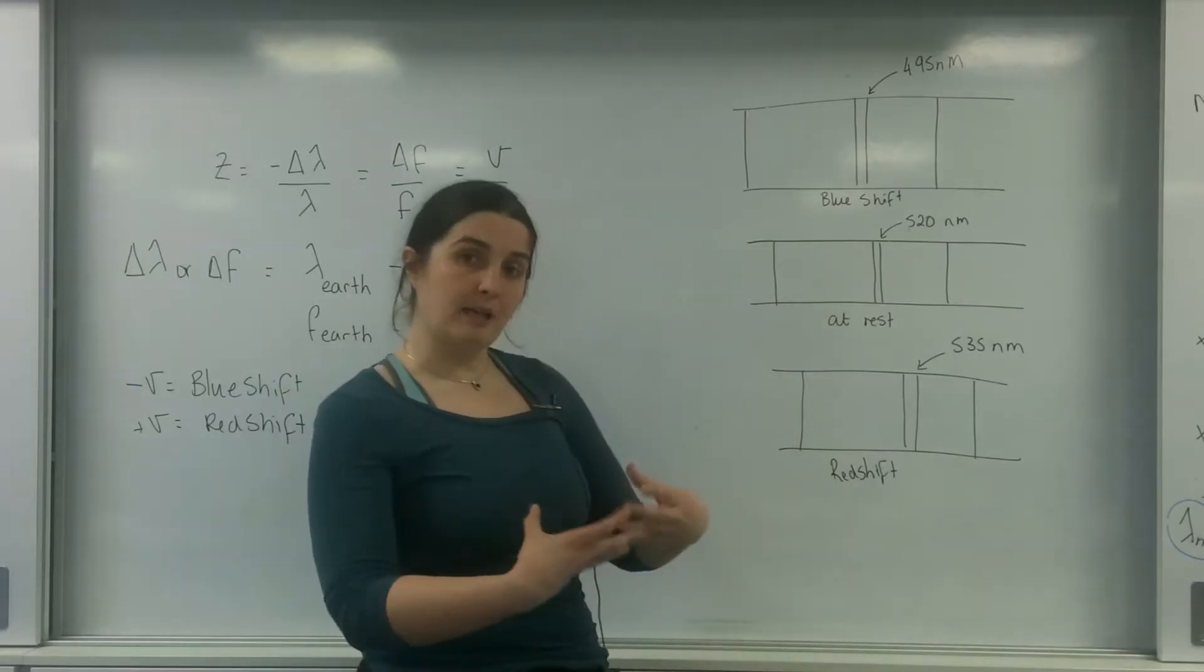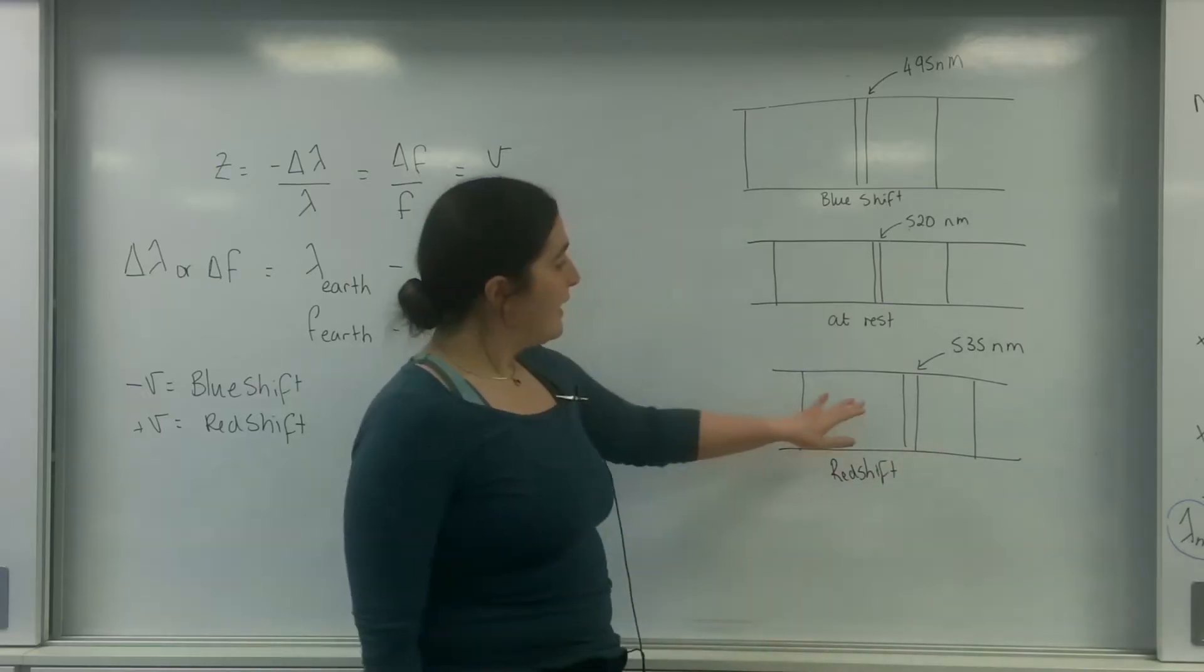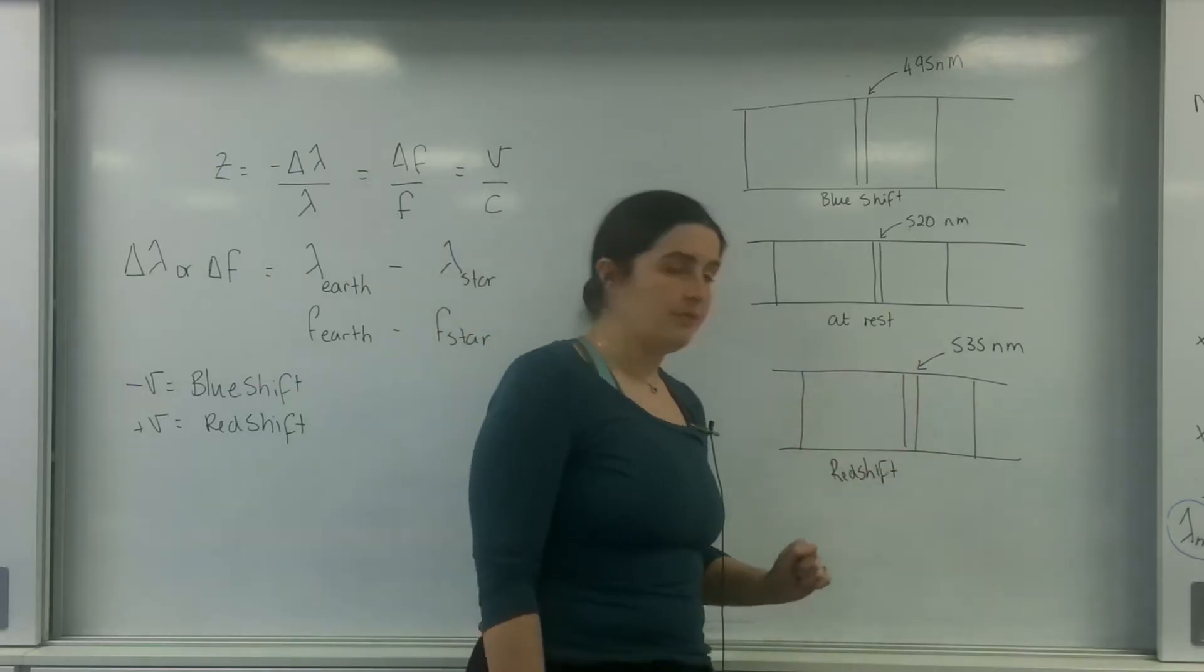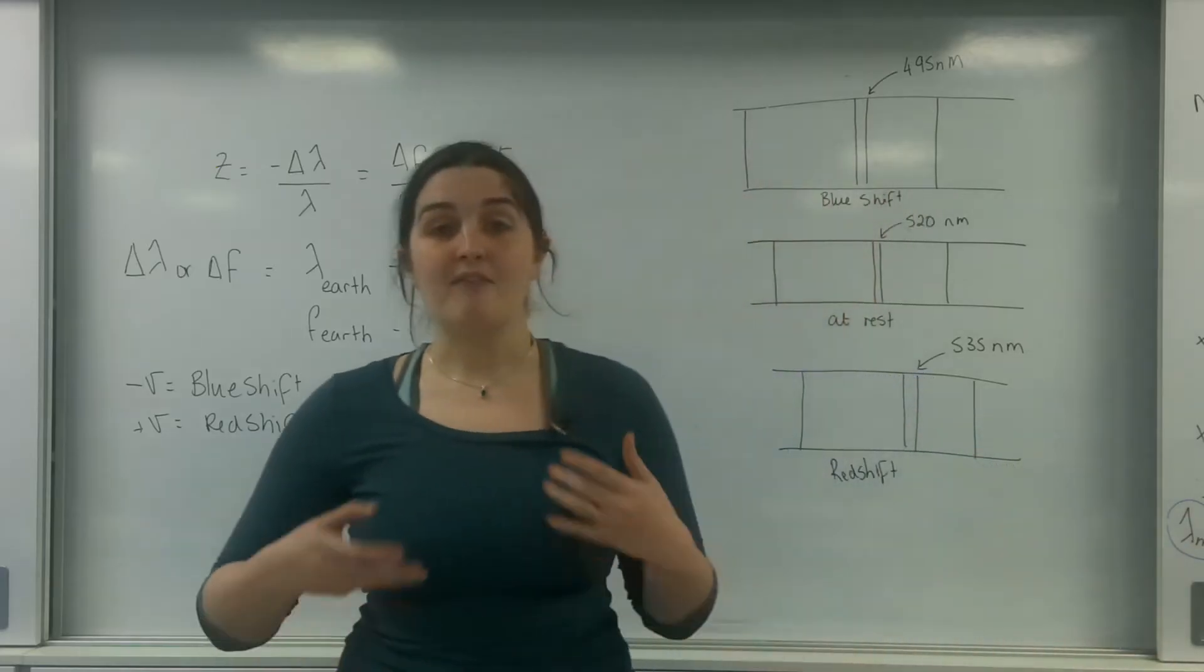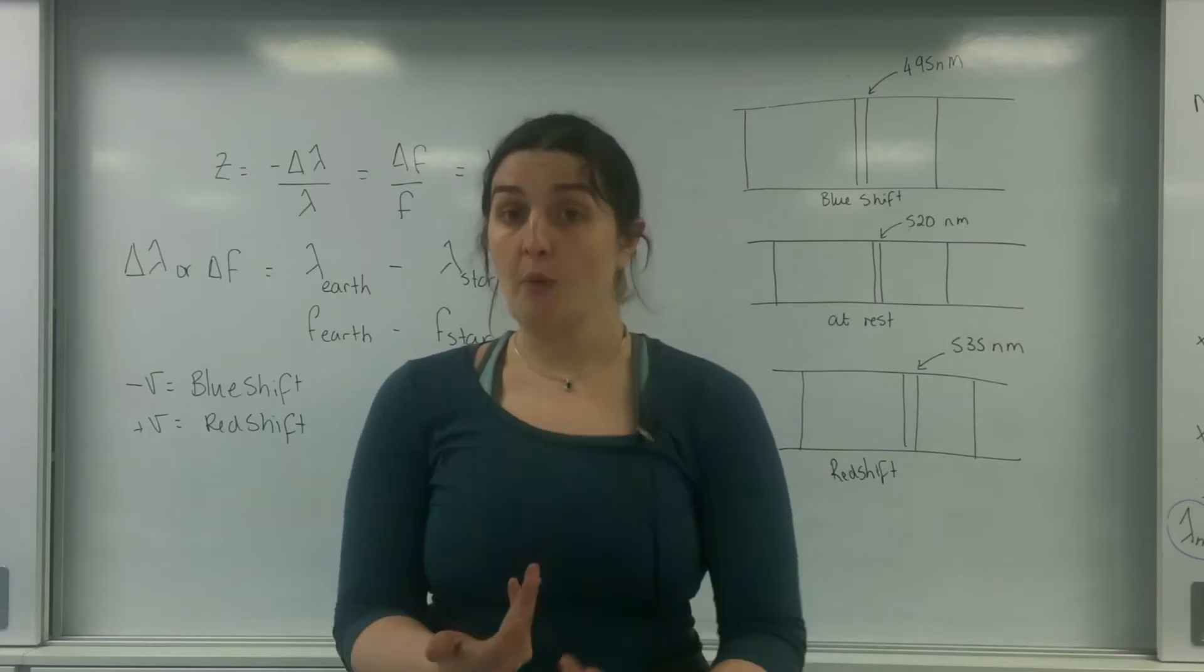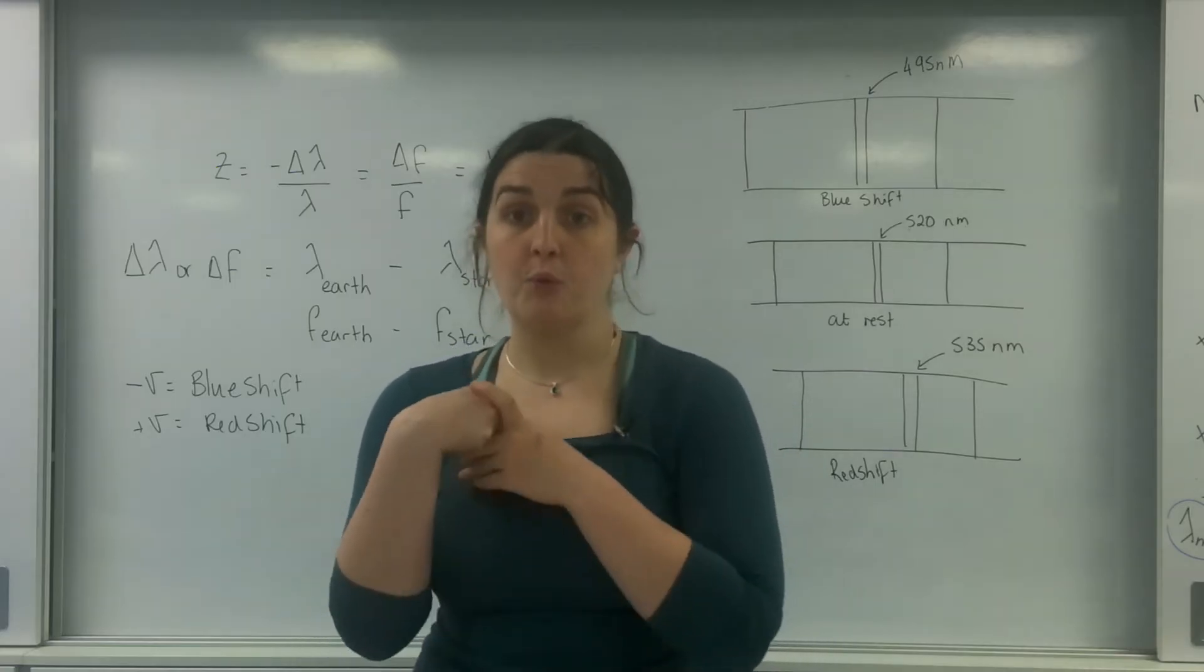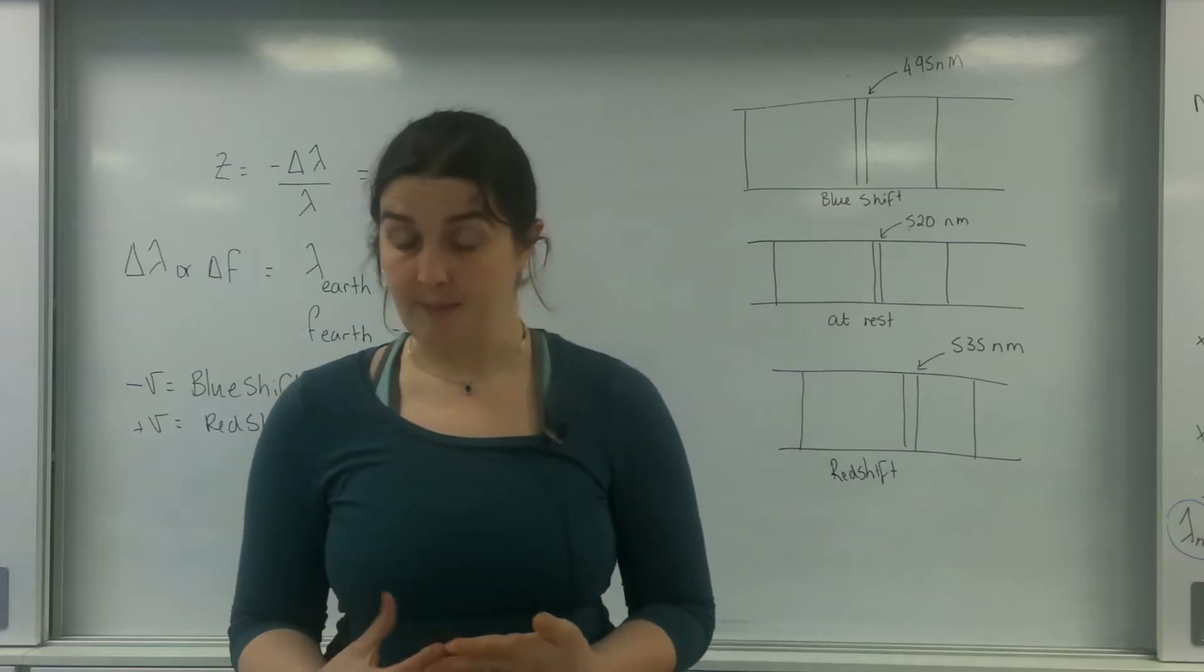Whereas if I took that element, that thing that's producing that element or absorbing that element, and push it away, that line moves to 535 and it shifts towards the red end. And this is what we call redshift and blueshift. And Doppler, in particular, you may have done this qualitatively. We're now going to look at this quantitatively.